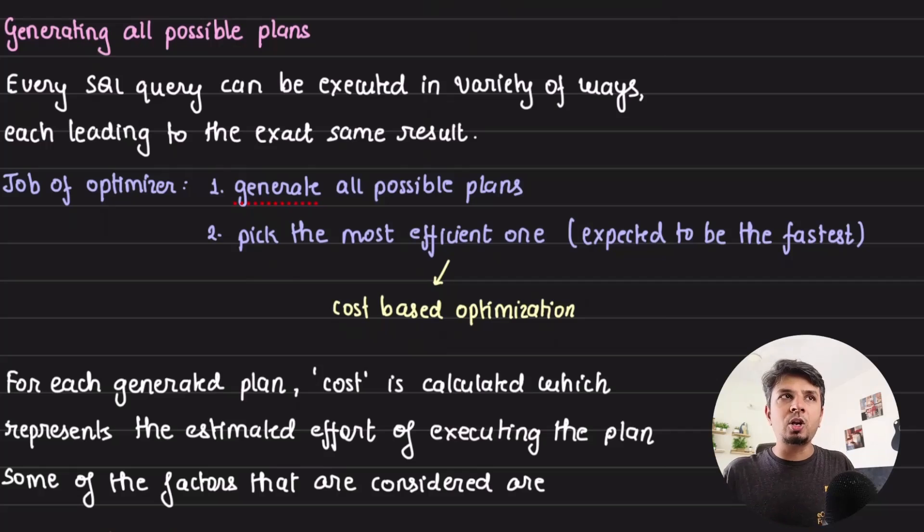The job of the planner and optimizer is to generate all possible plans and then pick the most efficient one. How does it pick the most efficient one? Basically there is a cost-based optimizer that it uses. For every generated plan, it estimates the cost involved in it, and then picks the one with the least amount of cost.